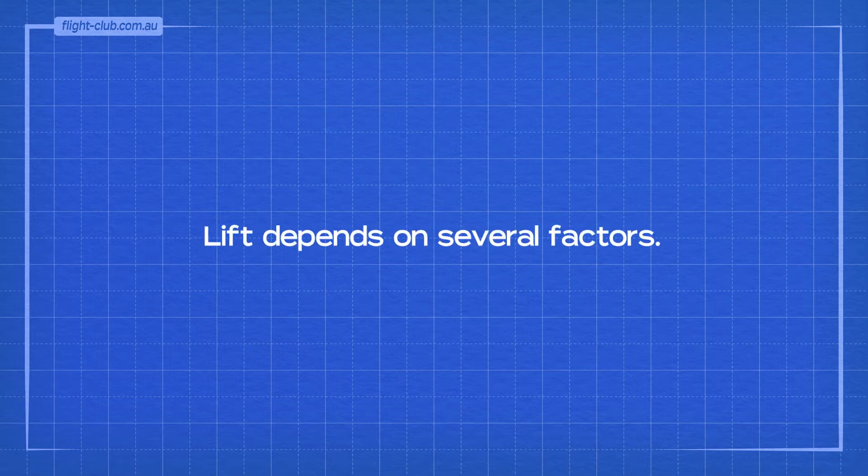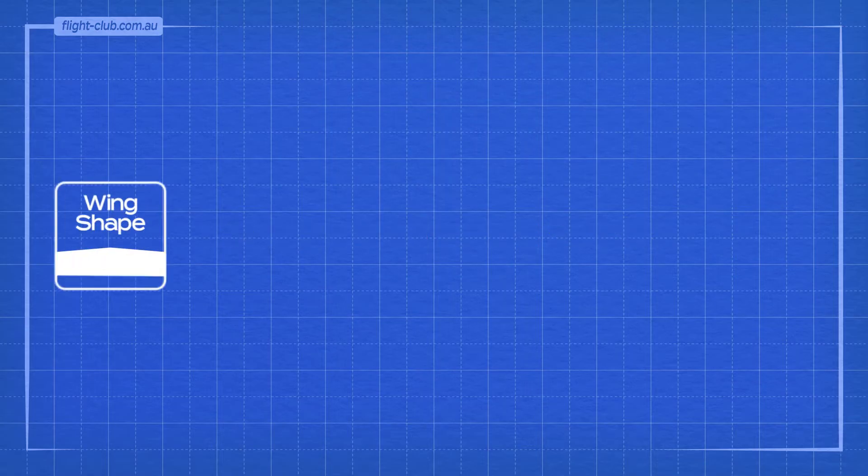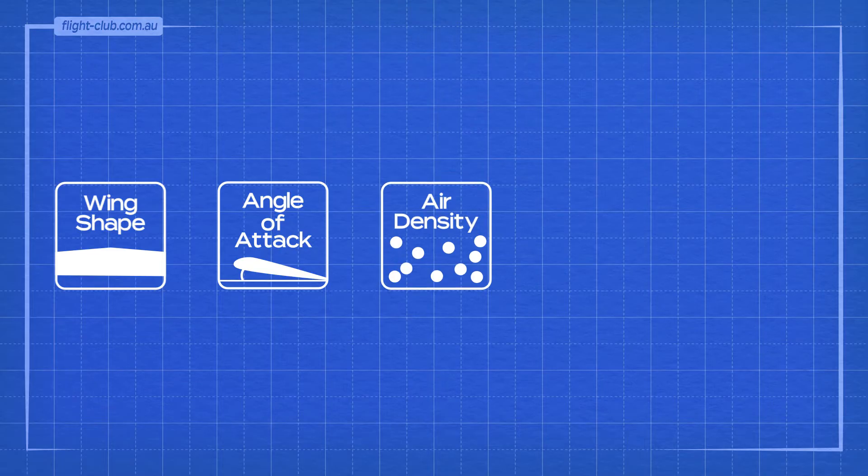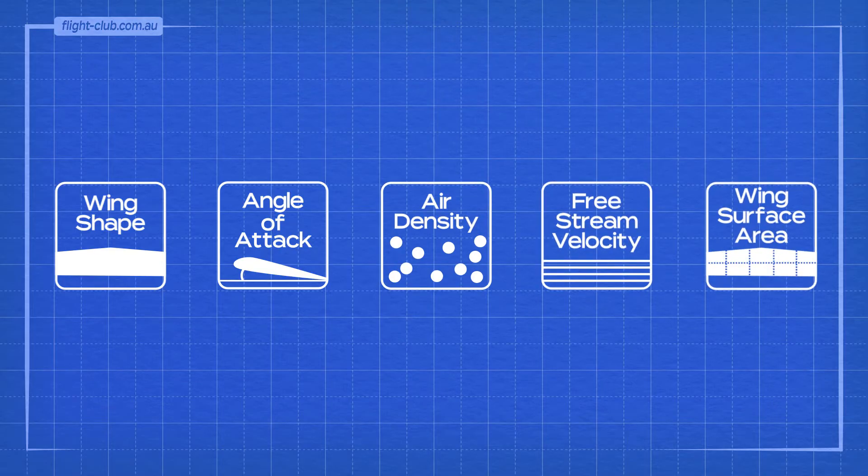By running experiments on wings, it's been shown that lift depends on several factors. These factors are wing shape, angle of attack, air density, free stream velocity, and the wing surface area.